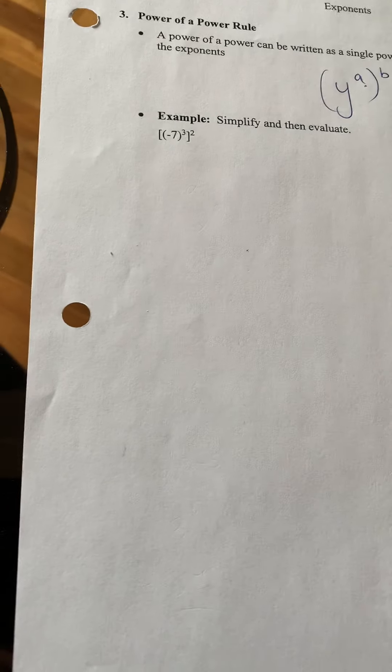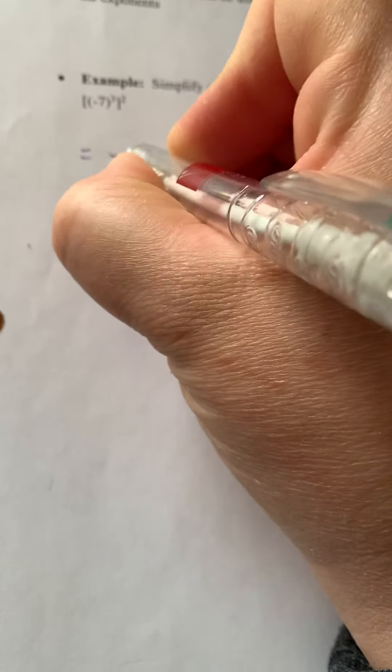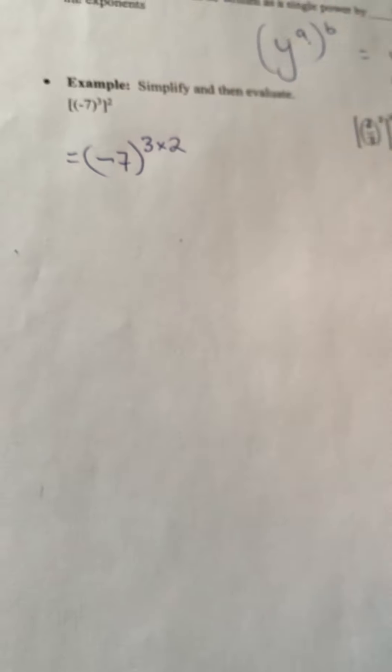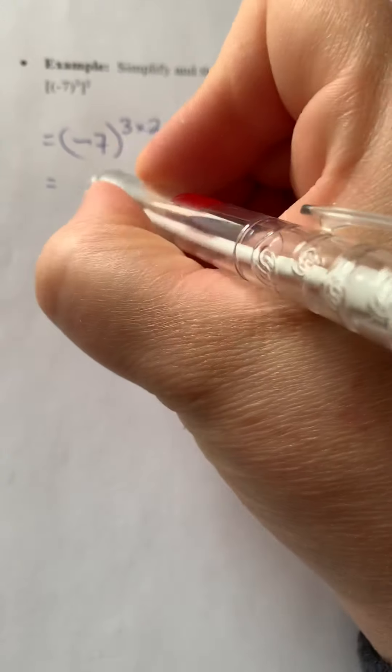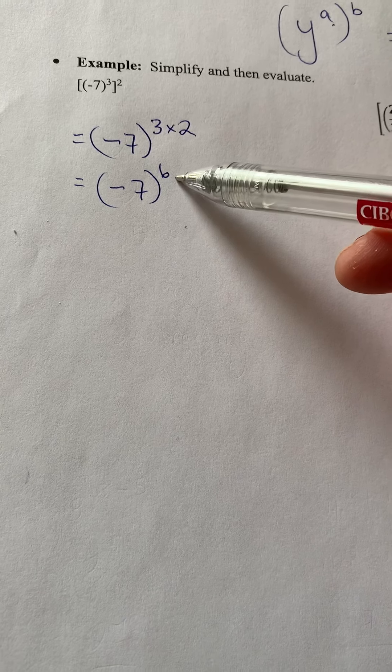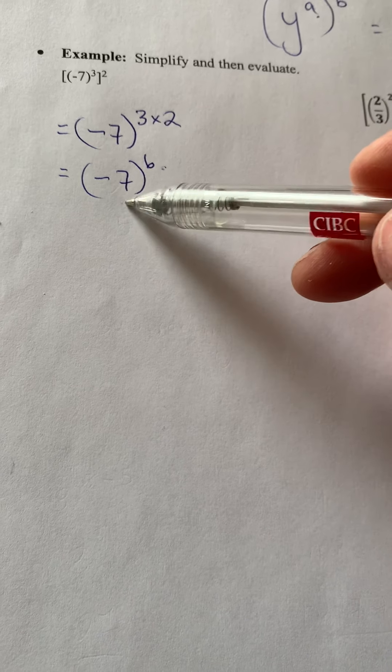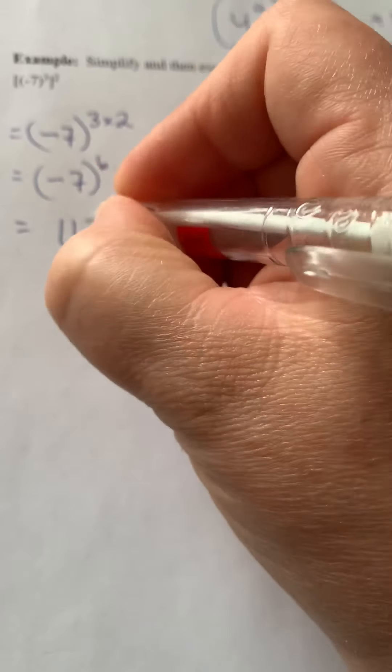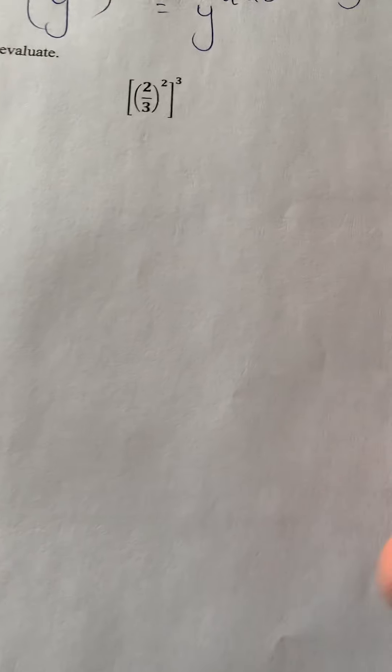So here we have negative 7, and it is in brackets, 3 times 2. That's all we're doing. So negative 7, again in brackets, to the exponent 6. Our exponent is an even number, which means our final answer should also be even. So please be mindful of that.